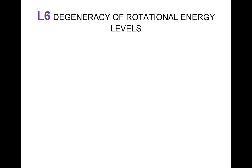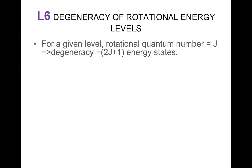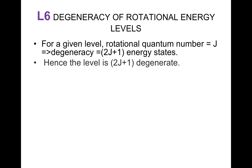Lecture 6: Degeneracy of Rotational Energy Levels. For a given level where the rotational quantum number is equal to j, the degeneracy is going to be equal to 2j plus 1 energy states. Hence, the level is 2j plus 1 degenerate.